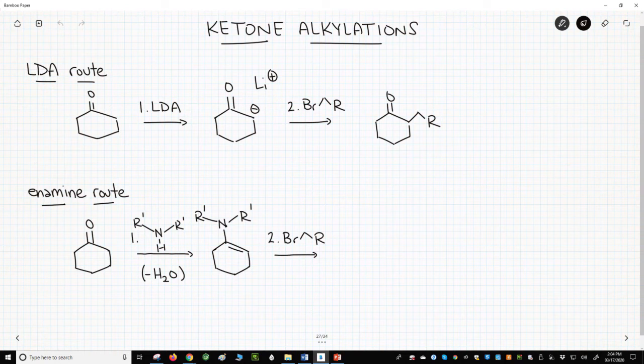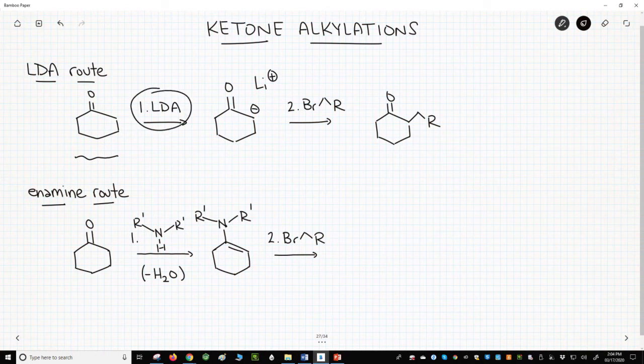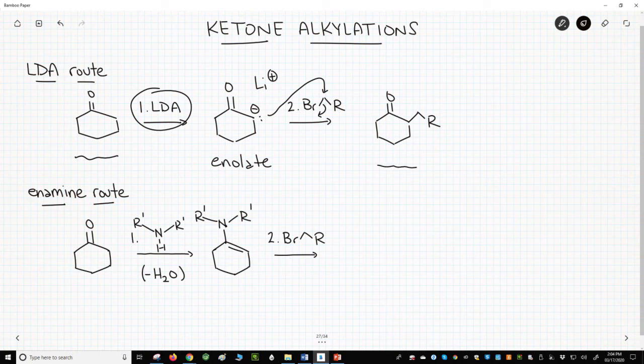At the top of the screen is a ketone alkylation. You take a ketone and treat it with a really strong base, normally LDA, to make an enolate. The enolate is then a strong nucleophile and reacts with a primary alkyl halide to make an alkylated ketone.